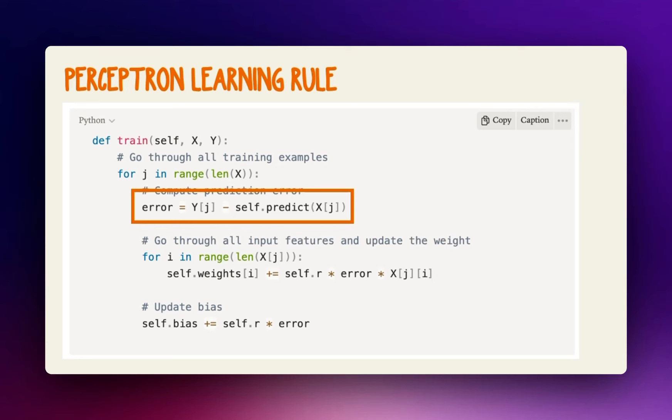Third, multiply each input value by the error and add it to the weight. Fourth, add the error to the bias.